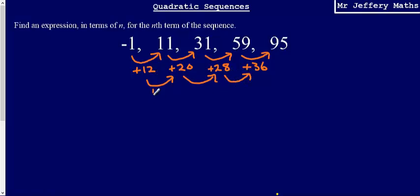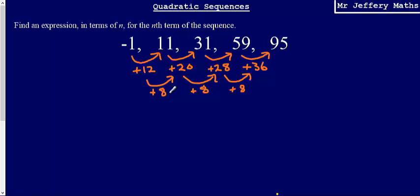Our second difference is 8 — the amount we're increasing by between terms increases by 8 each time. This second difference tells us the coefficient of n squared. Because we have a second difference, that means the sequence is a quadratic sequence, meaning we're dealing with n squared. To work out the coefficient, all we do is take the second difference and divide it by 2, giving us 4n squared as the beginning part of our sequence.